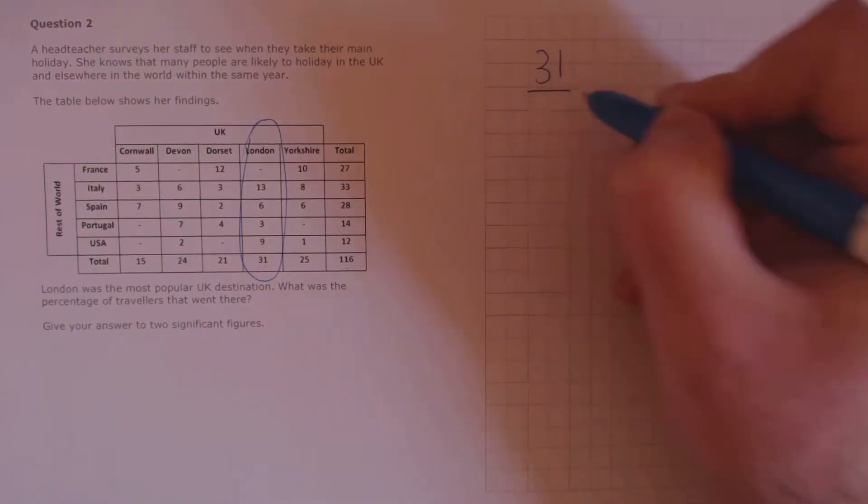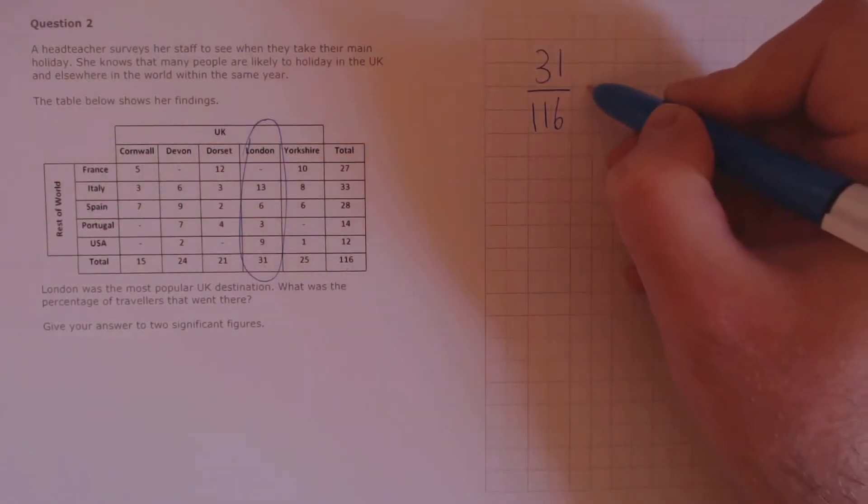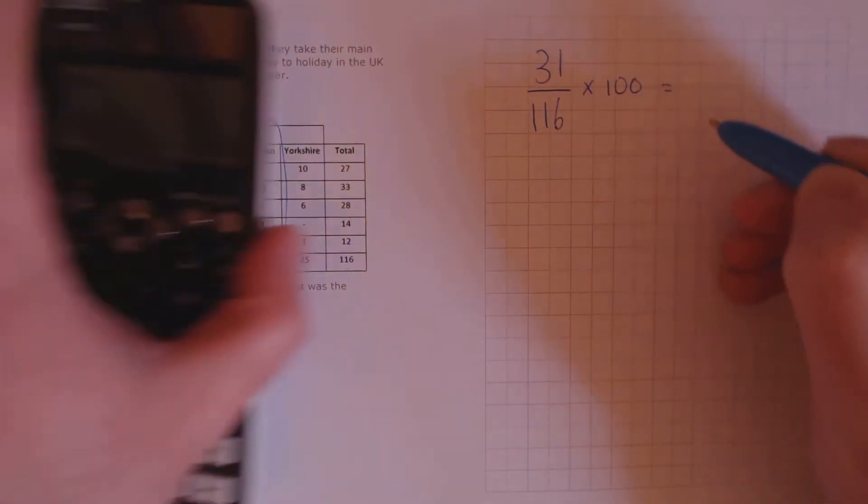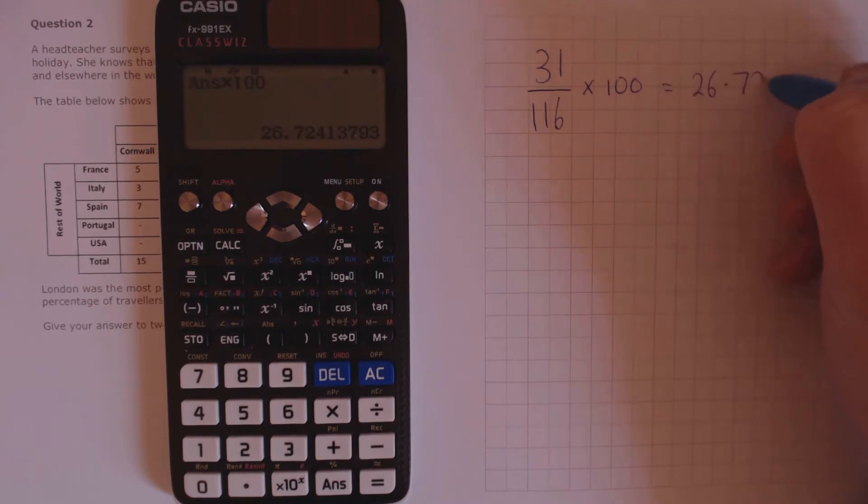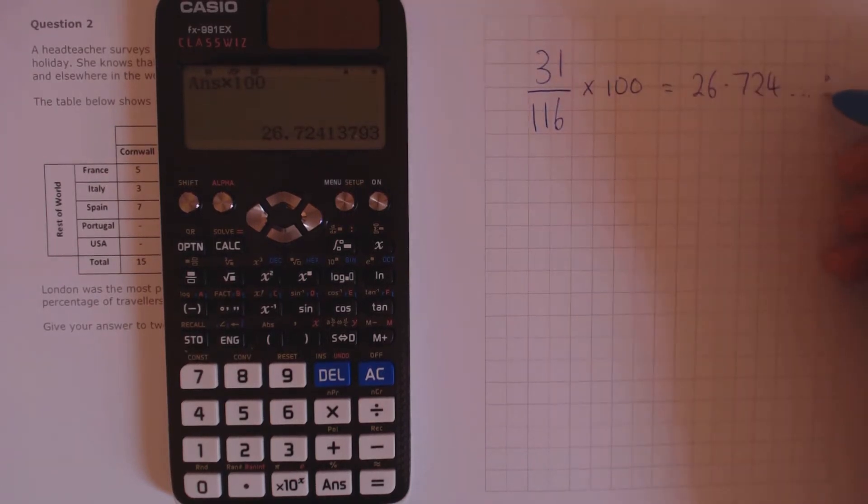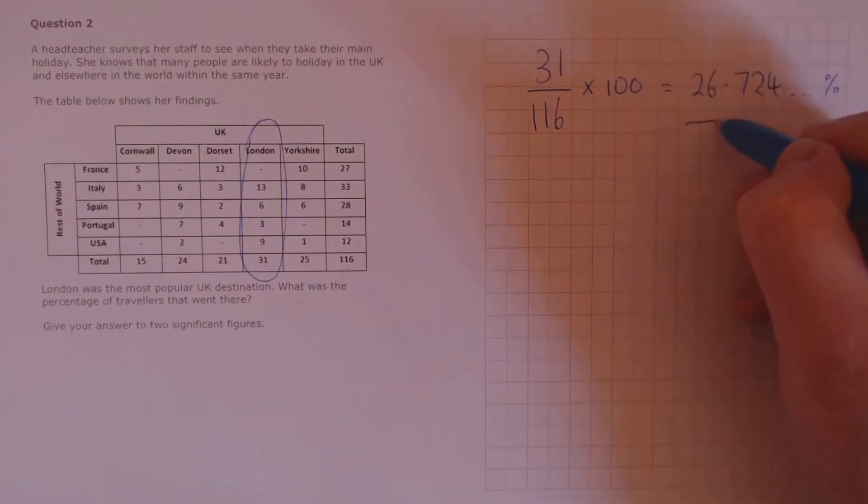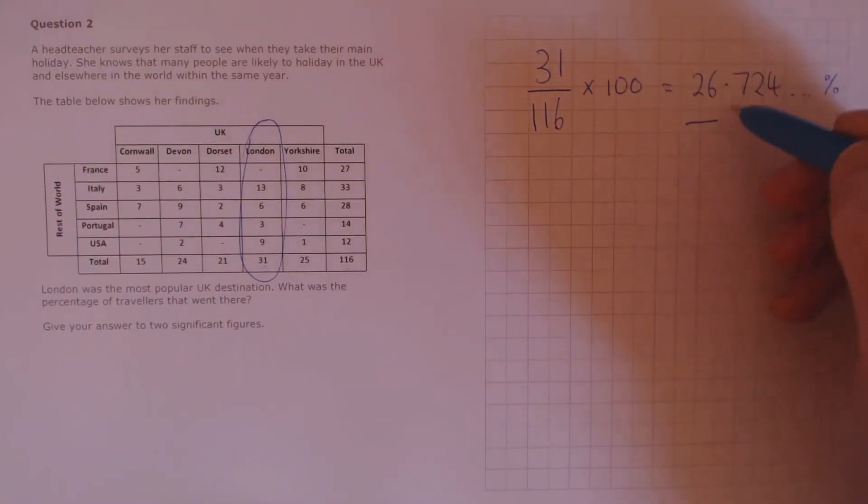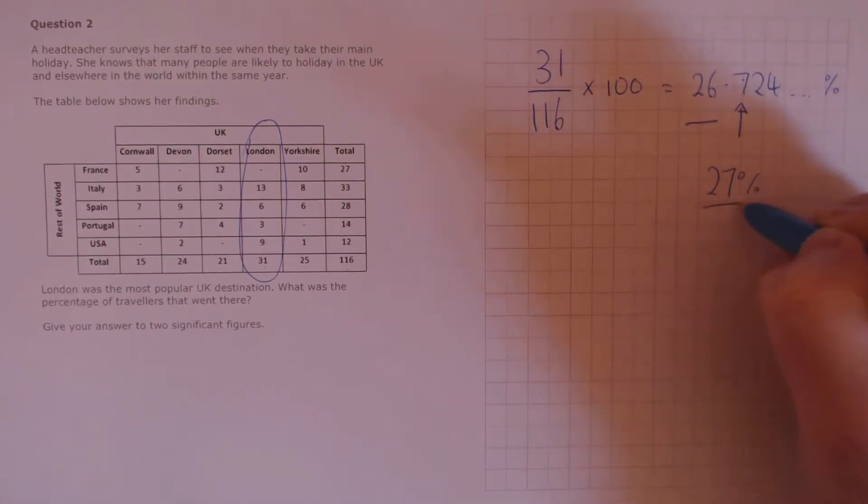If you want that as a percentage, we will have 31, the total that went to London, divided by 116, the total number of staff. To put that out as a percentage, we need to divide 31 by 116, then multiply by 100. So as a percentage, we have 26.724%. However, we need that to two significant figures. That's the first two figures here. However, we need to check to see if we need to round up or not. This number is greater than 5, so we do round up to 27%.